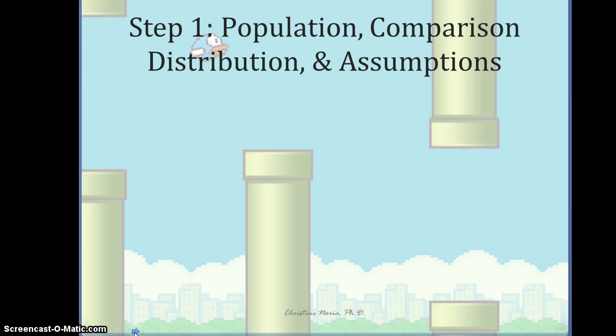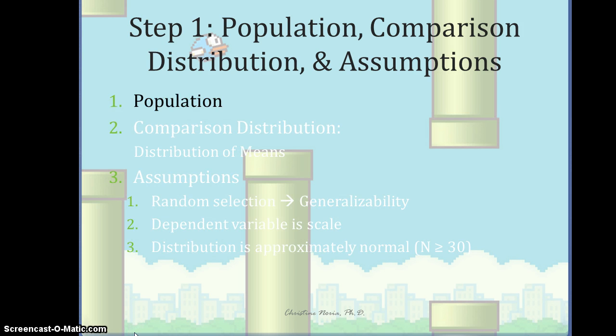So we begin with our population, comparison distribution and assumptions. First our populations: we have four because we have four different levels of the independent variable. We have populations of Flappy Bird scores for people who didn't consume espresso, for people who consumed one shot, two shots, and three shots of espresso. So those are our four groups. Our comparison distribution is an F distribution. So now that we're doing analysis of variance, we're using a different distribution for our test.